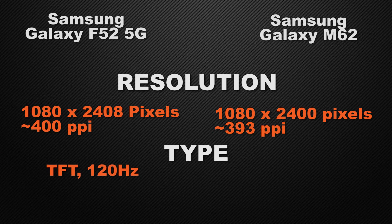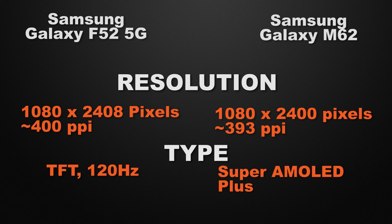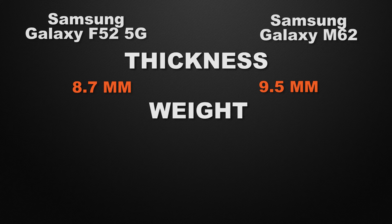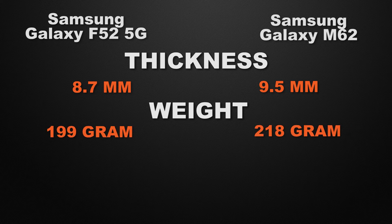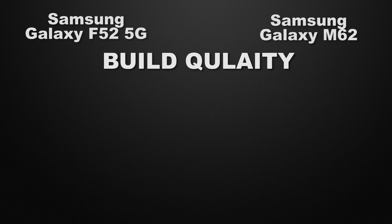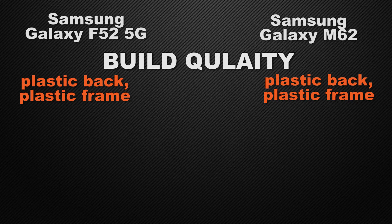About the display type, the F52 has a TFT display with a 120Hz refresh rate, whereas the M62 has a Super AMOLED display. So the winner here is the M62 because Super AMOLED produces sharper images, better viewing angles, and much better color vibrancy than a TFT panel. Moving to body features, the F52 has 8.7mm thickness whereas the M62 has 9.5mm, so the winner is the F52 because it has a slimmer body. The F52 weighs 199 grams versus the M62's 218 grams, so the F52 wins for lighter body weight. Both devices have Gorilla Glass 3, so it's a tie.